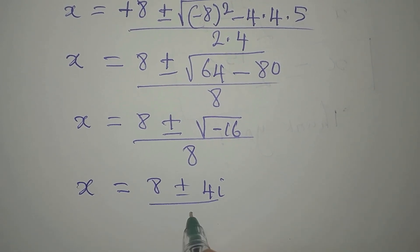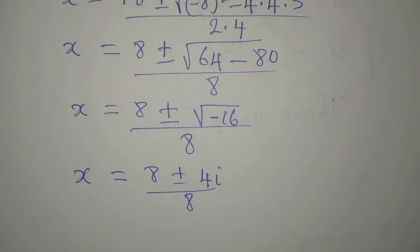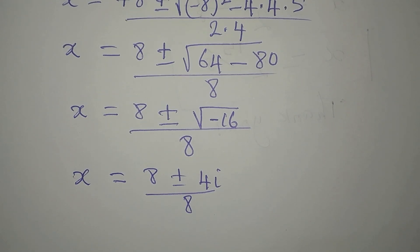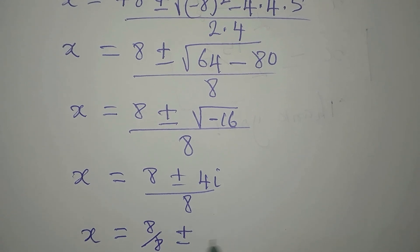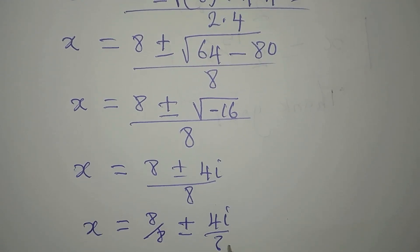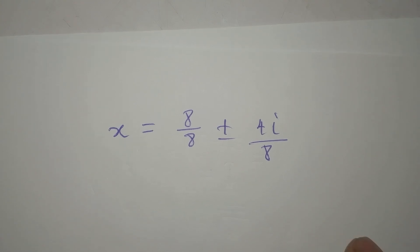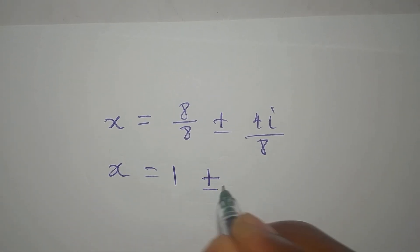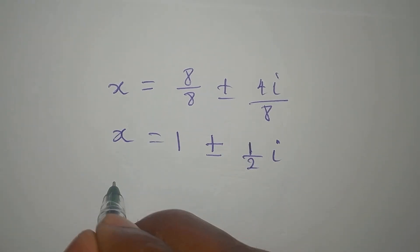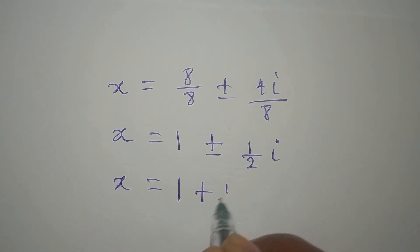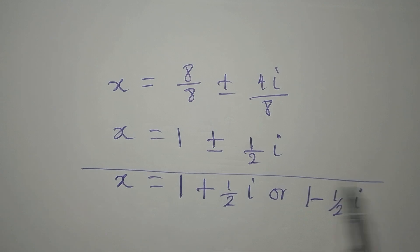The square root of negative 16 is 4i because of the negative. So we are dividing by 8. We can split this as 8 over 8 plus or minus 4i over 8, which gives x equals 1 plus or minus one-half times i. This is a two-in-one solution: x equals 1 plus one-half i, or x equals 1 minus one-half i. So from here we have two complex solutions.